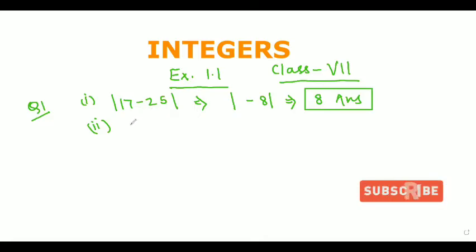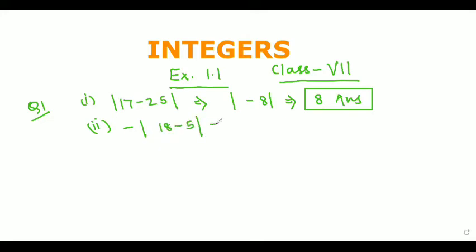In the next part, there is a negative sign outside the absolute value, and inside we have 18 minus 5. The negative sign outside the absolute value sign will remain intact. 18 minus 5 of course comes out to be 13. After coming out from the absolute value, 13 is already positive so no change occurs there. But the negative sign outside remains, so negative sign will stay with the 13, giving us minus 13 as our answer.